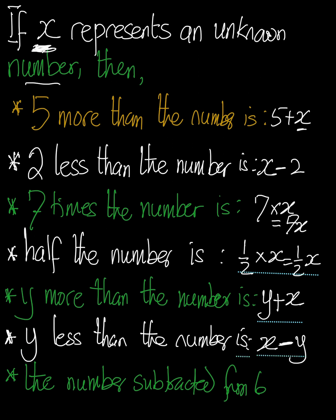And the final one says that the number subtracted from 6. The number subtracted from 6. So if you have 6, and we're going to subtract X out of it, giving 6 minus X, which is the number subtracted from 6.